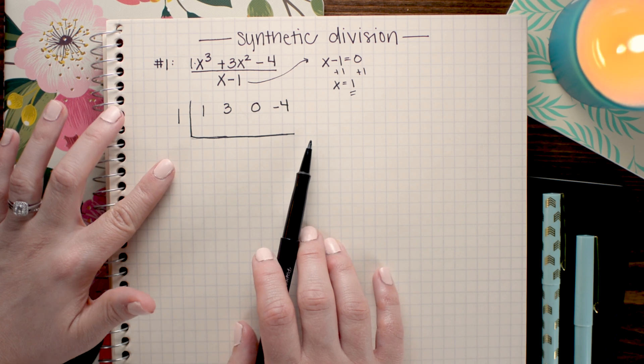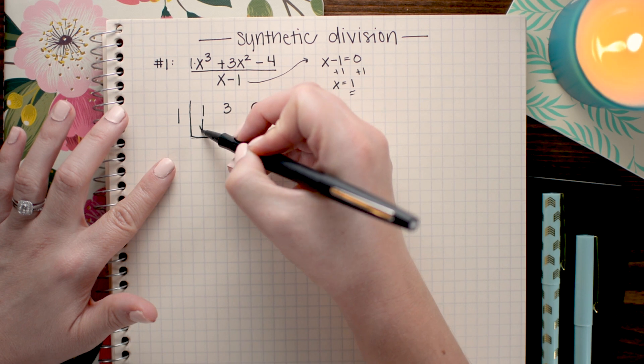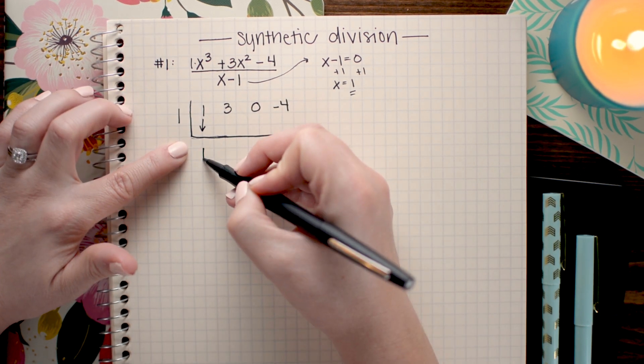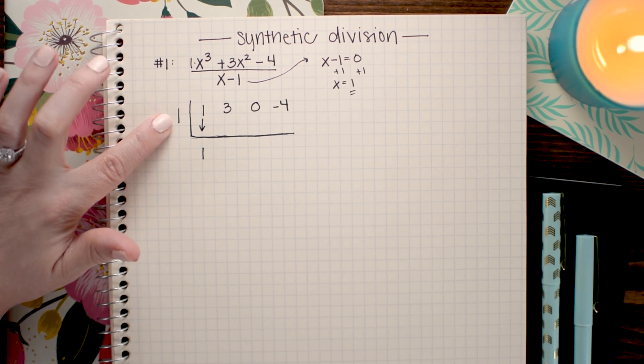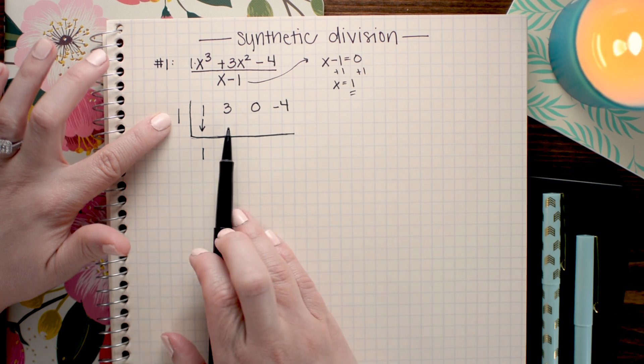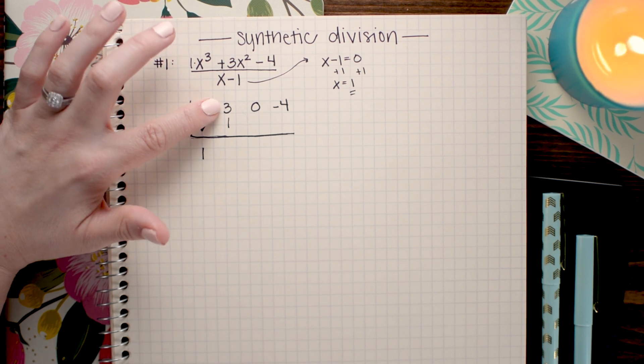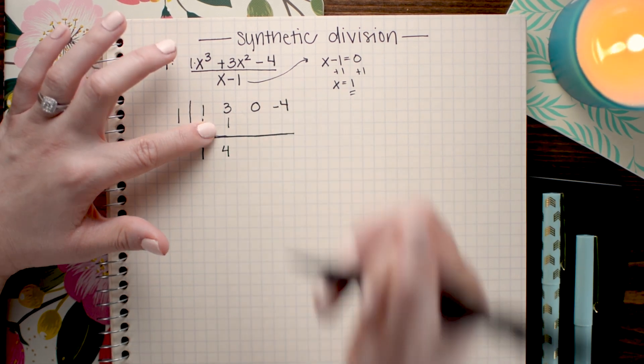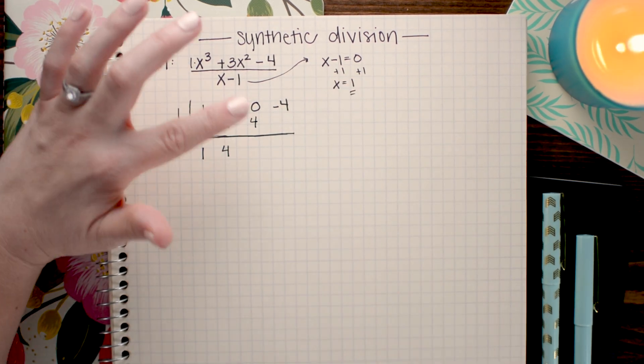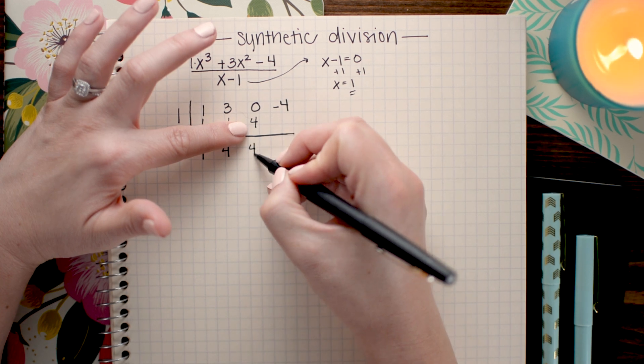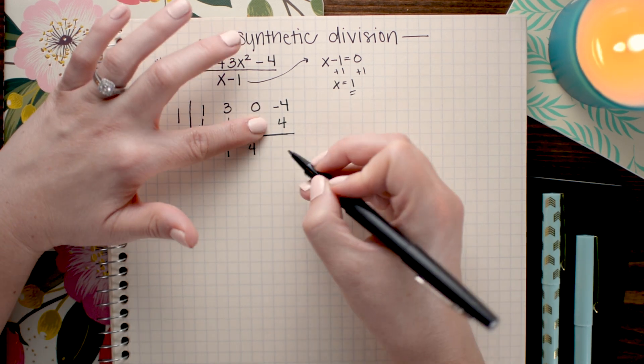And this is the quick and easy and kind of fun part. It's just going to go like this. So we're going to take the first value, draw an arrow and bring it down. Then we're going to multiply that value with the value that represents our divisor. So 1 times 1. And we're going to place it under the next number in the next column. Then I'm going to sum that column. So 3 plus 1 is 4. And I'm going to repeat this process. So 4 times 1 is 4. 0 plus 4 is 4. 4 times 1 again is 4. And negative 4 plus 4 is 0.